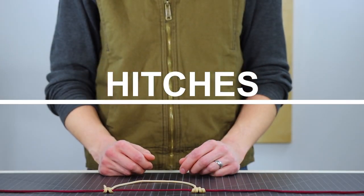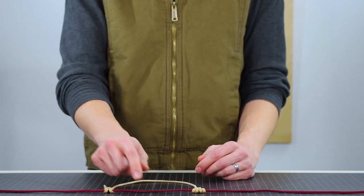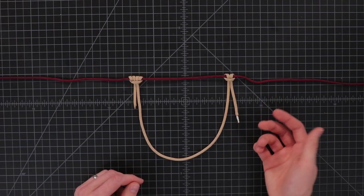Next we've got hitches. Hitches are for attaching a rope to an object or a rope to the middle of another rope. These of course come in different kinds.